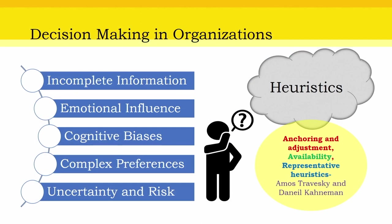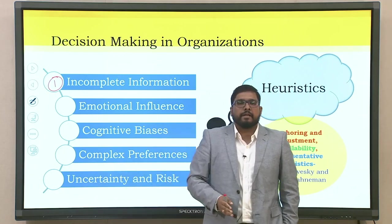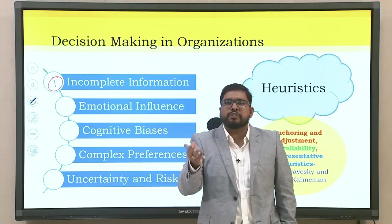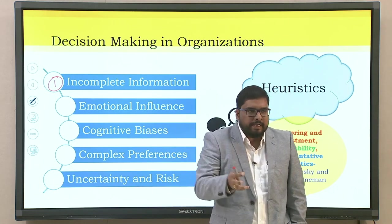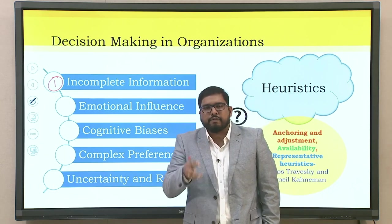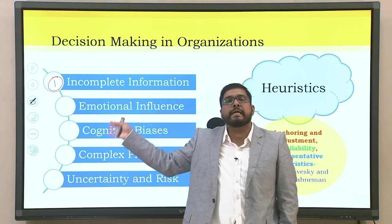The first and foremost aspect of decision making in organization is incomplete information. When looking into any organizational context, it is very hard to have the entire set of available information at any given situation. When conducting a meeting or making critical decisions that must be taken immediately, the set of information is not exhaustive. There is always a problem of incomplete information.